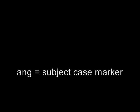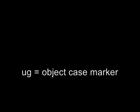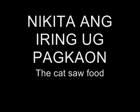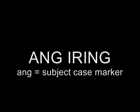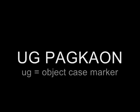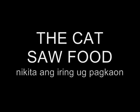Now we're going to go over case markers. There are two major ones you should know for a basic sentence: 'ang', which is the subject marker, and 'og', which is the object case marker. Here's an example sentence: 'Nakita ang iring og pagkaon.' In this sentence, 'iring' is the subject because it follows 'ang', and 'pagkaon' is the object because it follows 'og'. 'Nakita' means 'saw', so this sentence translates to 'The cat saw food.'